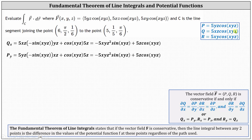Applying the product rule, we have the first function 5xz times the derivative of the second function with respect to x, which is the derivative of cosine(xyz) with respect to x — that is negative sine(xyz) times the derivative of xyz with respect to x, treating y and z as constants, which gives us times yz. Then we have plus the second function cosine(xyz) times the derivative of the first function with respect to x, which is the derivative of 5xz with respect to x, which is 5z. Simplifying, we have negative 5xyz² sine(xyz) plus 5z cosine(xyz).